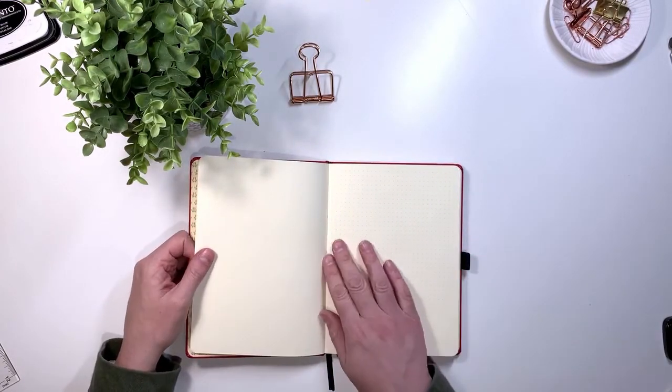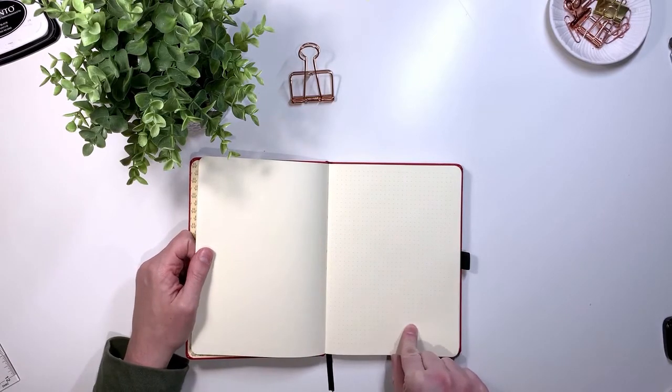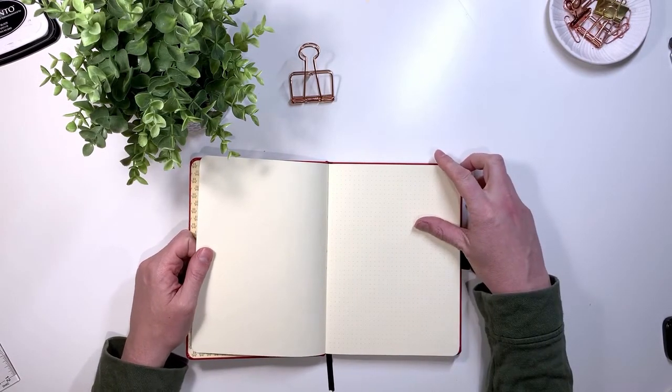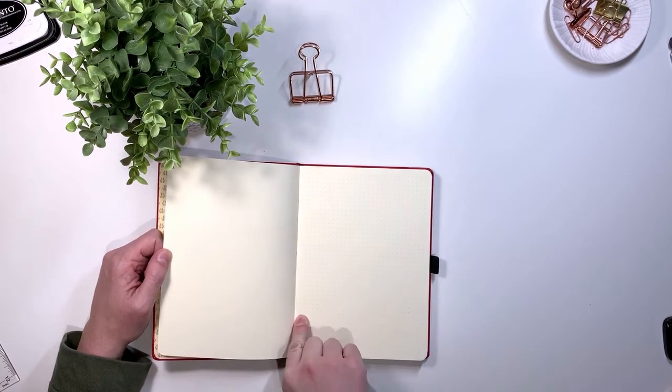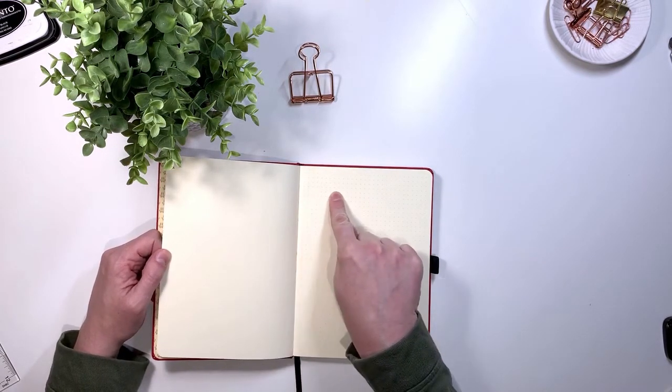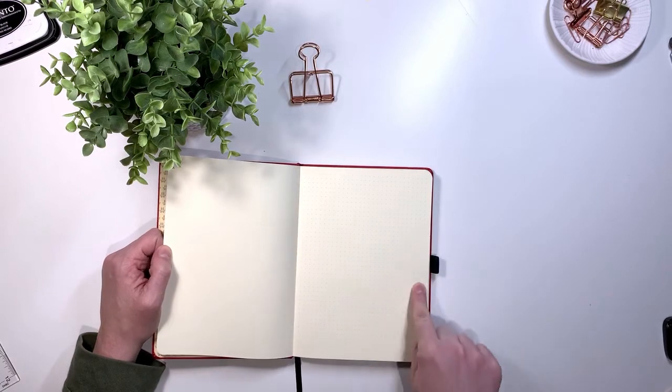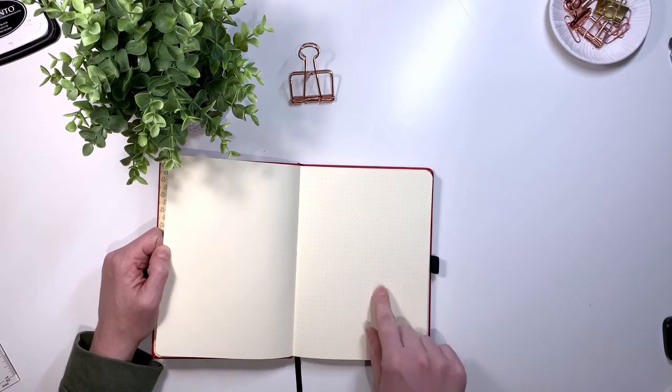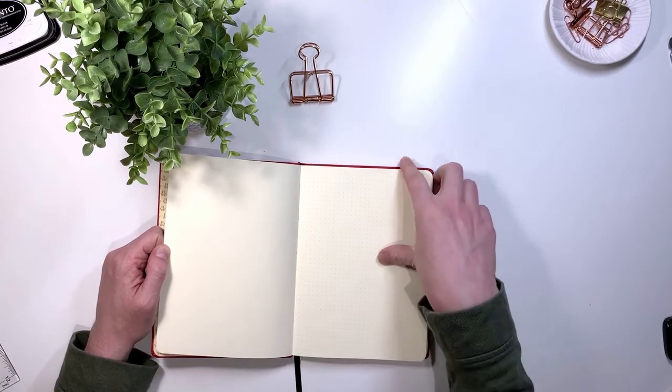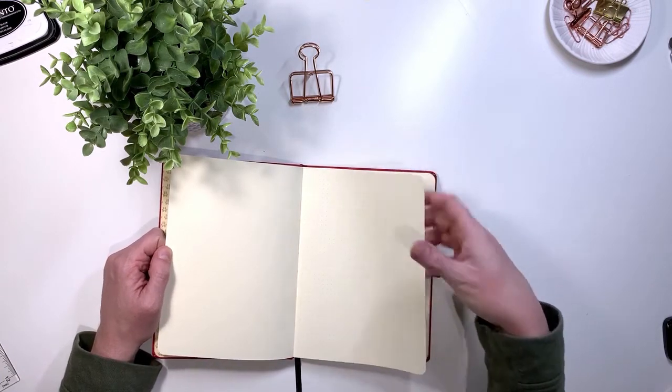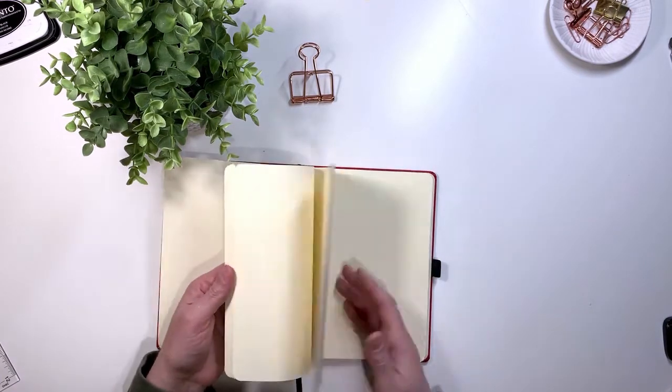The paper is a cream colored paper. It is coated and perforated so you can tear it out if you need to. The dots are 28 dots across and 39 dots down. The dots are your standard 5mm distance and the margins are even throughout the journal.